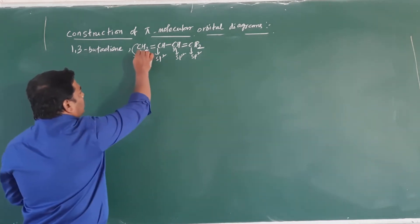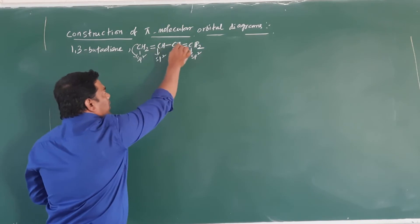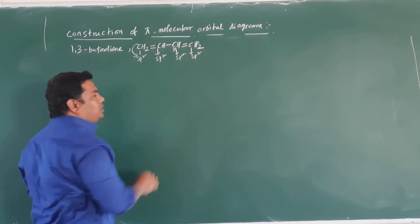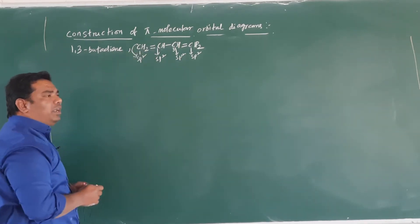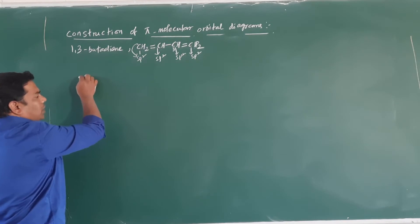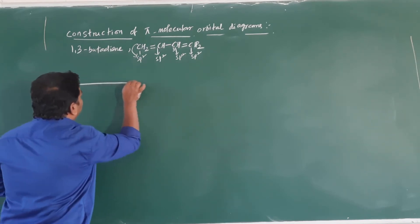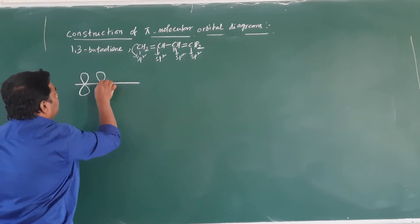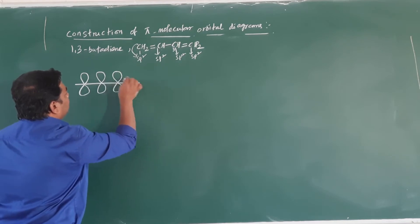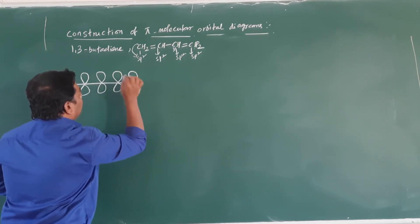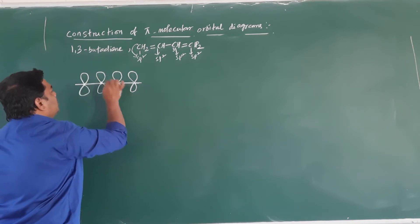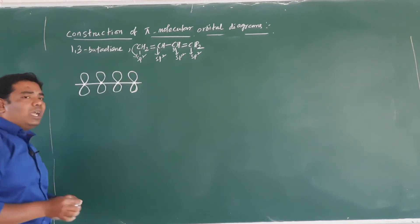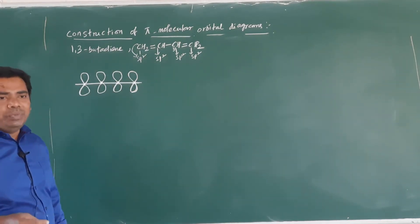Here we have one PZ orbital on each carbon atom — one PZ orbital, one PZ orbital, one PZ orbital, and one PZ orbital. These are unhybridized PZ orbitals present in each and every carbon atom. These unhybridized PZ orbitals are numbered 1, 2, 3, and 4, corresponding to C1, C2, C3, and C4 carbons.